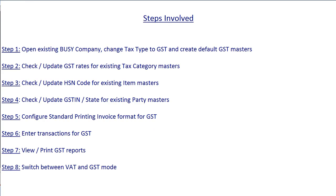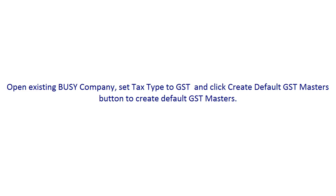Step 1: Open existing Busy company and change tax type to GST, and create default GST-related masters. Step 2: Check and update GST rate for existing tax category masters. Step 3: Check and update HSN code for existing item masters. Step 4: Check and update GST number and state for existing party masters. Step 5: Configure standard printing invoice format for GST. On performing these five steps, you are ready to work in GST and enter GST-related transactions and view and print GST reports.